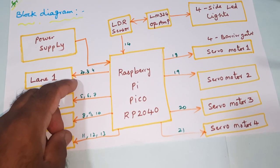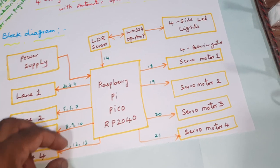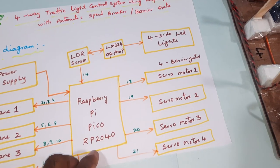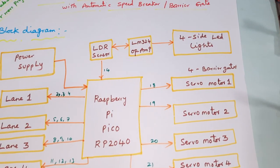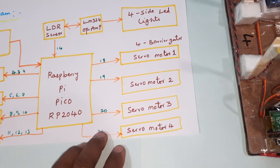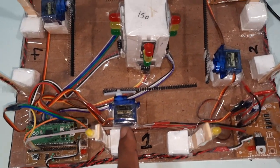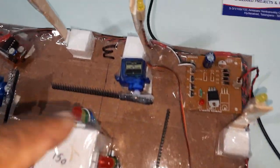Those are connected with GPIO pins 2, 3, 4, 5, 6, 7, 8, 9, 10, 11, 12, 13. We have a 5 volts power supply, Raspberry Pi Pico RP2040, and servo motors 1, 2, 3, and 4 connected to pins 18, 19, 20, 21 - SG90 servo motors.